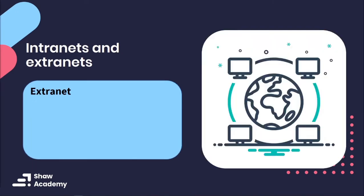On the other hand, an extranet is pretty much similar to an intranet but also extends beyond the boundaries of an organization. A typical example includes using an extranet for business partners, customers, and suppliers. For instance, if a retail store has several suppliers, they can extend the intranet to external stakeholders such as suppliers, so that suppliers can monitor if inventory is running low. The idea here is that you grant special permission to certain stakeholders based on the organization's needs. And that brings us to the closing of the networking topic.